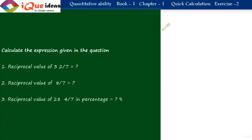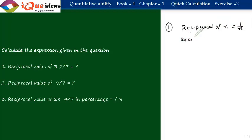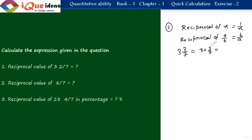Now we take up the second part of exercise 2. First, let us understand the reciprocal of a fraction. The reciprocal of x is 1/x. The reciprocal of a/b is b/a. Question 1 asks for the reciprocal of 3 and 2/7. First simplify: 3 times 7 plus 2 equals 23, so the number is 23/7. The reciprocal is 7/23.